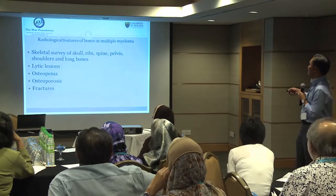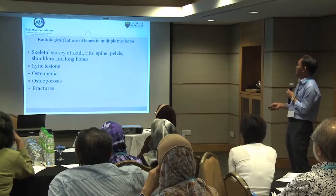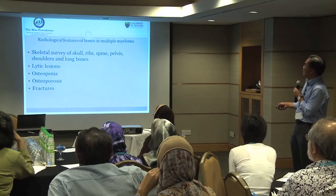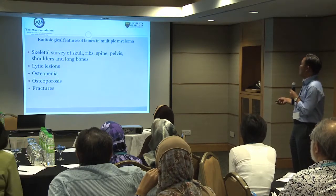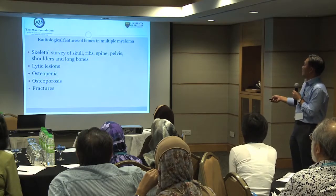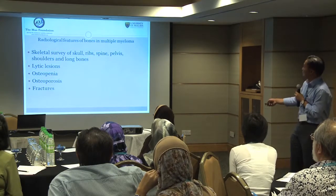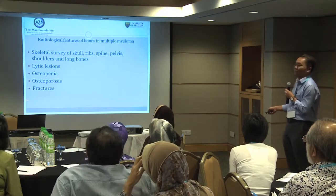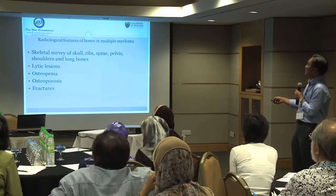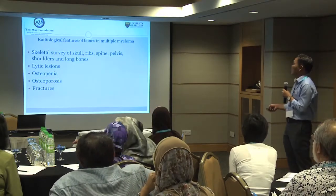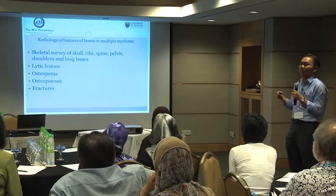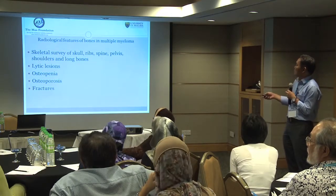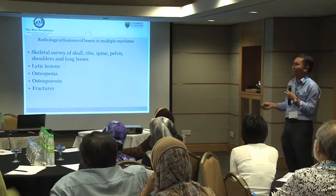What can we see on x-ray in a patient with multiple myeloma? Usually we take x-rays of the skull, ribs, spine, all the long bones, pelvis, and shoulders to look for lytic lesions, osteopenia, osteoporosis, or fractures. Some centres use MRI to detect plasmacytoma — the solid tumour of plasma cells. But generally in our setting, we just do x-ray.